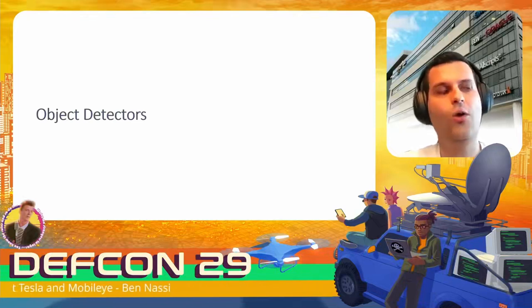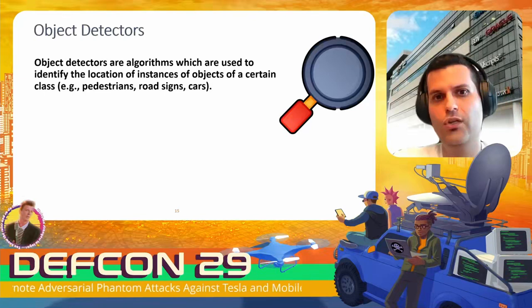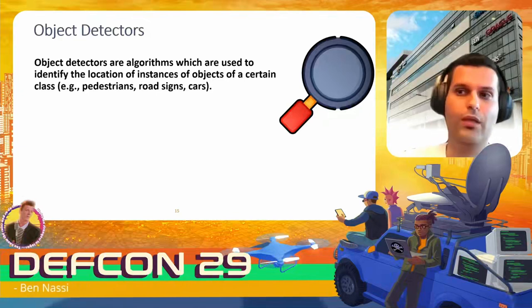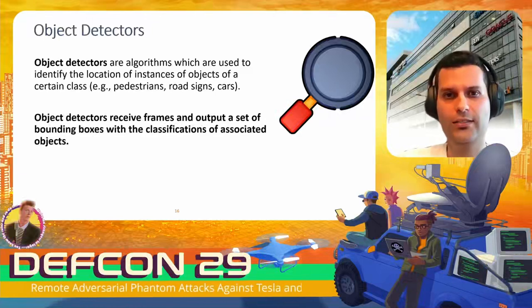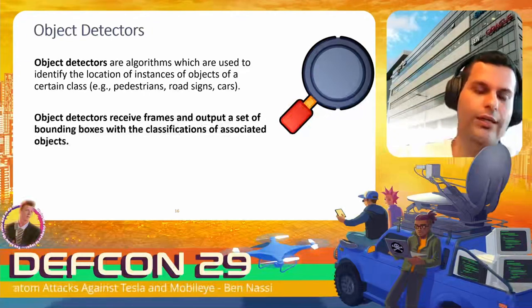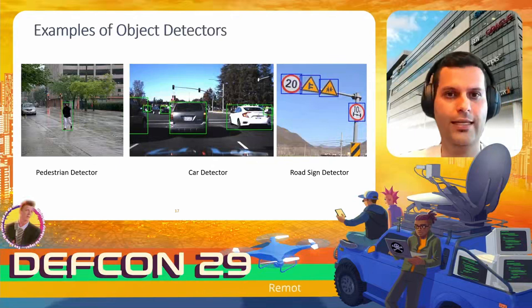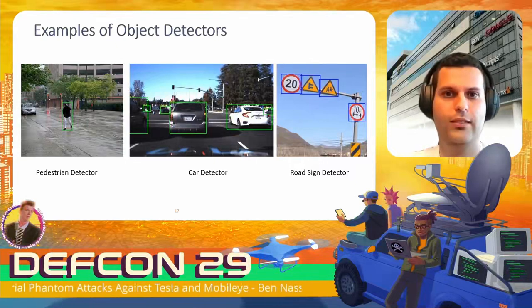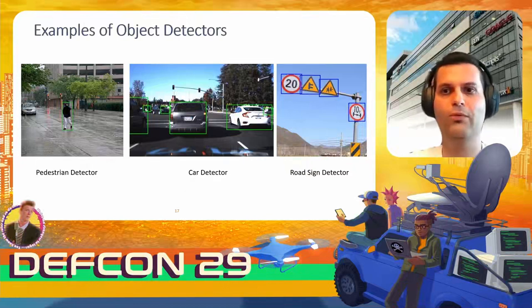Object detectors are algorithms used to identify the location of instances of objects of a certain class — for example, pedestrians, road signs, or cars. They receive frames as input and output a set of bounding boxes with classifications of associated objects. You can see a pedestrian detector on the left with a bounding box around the pedestrian, a car detector in the middle, and a road sign detector on the right.